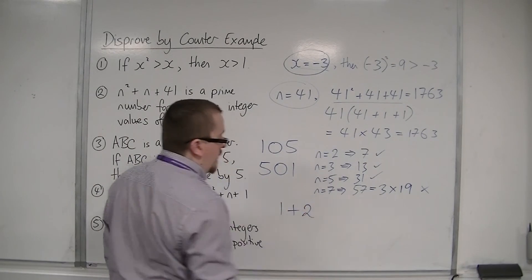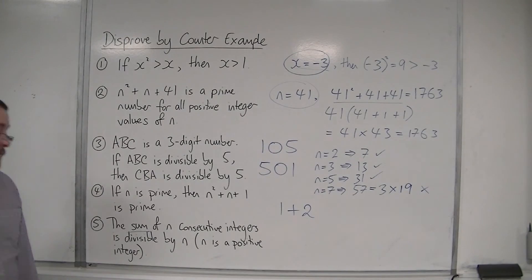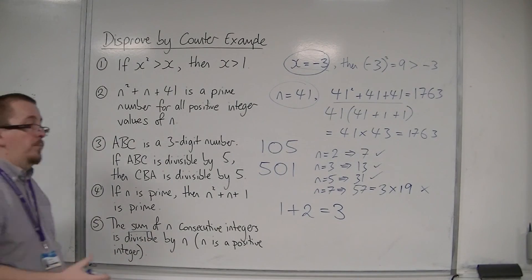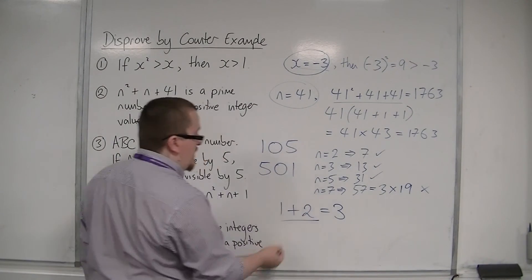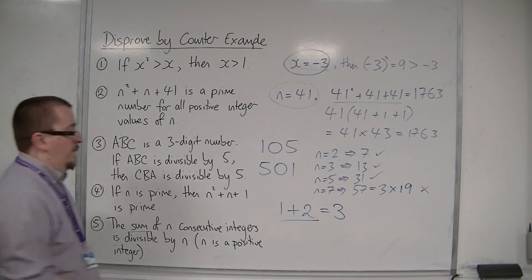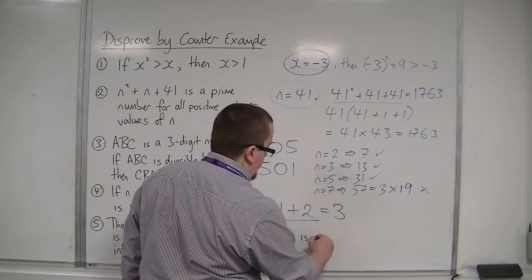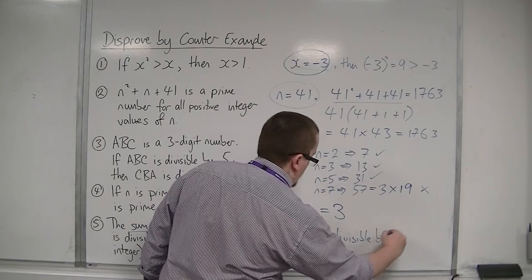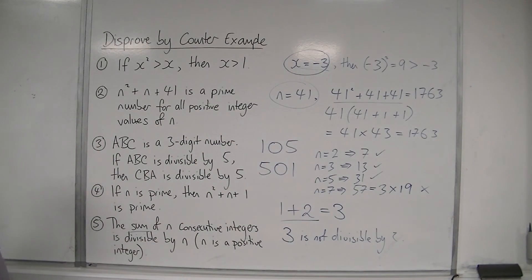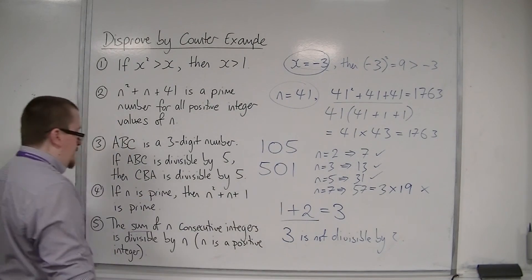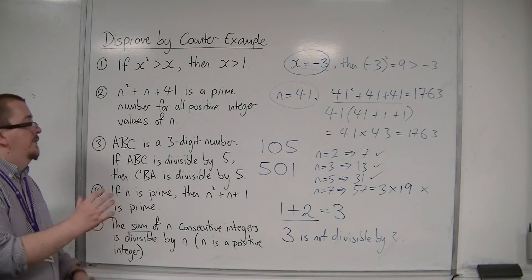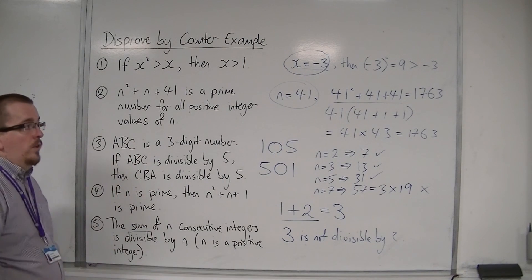so let's say 1 plus 2. Well, 1 plus 2 is 3. But 3 is not divisible by 2, because I'm going to get two integers there. 3 is not divisible by 2. So this statement fails. So I've found that the sum of two consecutive integers, namely 1 and 2, is not divisible by 2. So one example, and the statement failed.